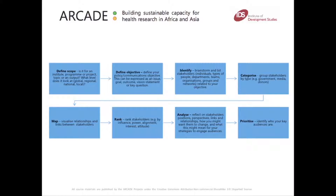Next, you need to analyse stakeholders' positions, perspectives, links and relationships and how you might want them to change and what this might mean for your strategies to engage with them. And lastly, number eight, you need to prioritise your key audiences — these are the people that you think are really going to help you achieve the change you want to see. It's important to visualise how relationships between organisations such as local advocacy organisations, tobacco companies, the private sector and government agencies such as the Ministry of Health actually work in practice.